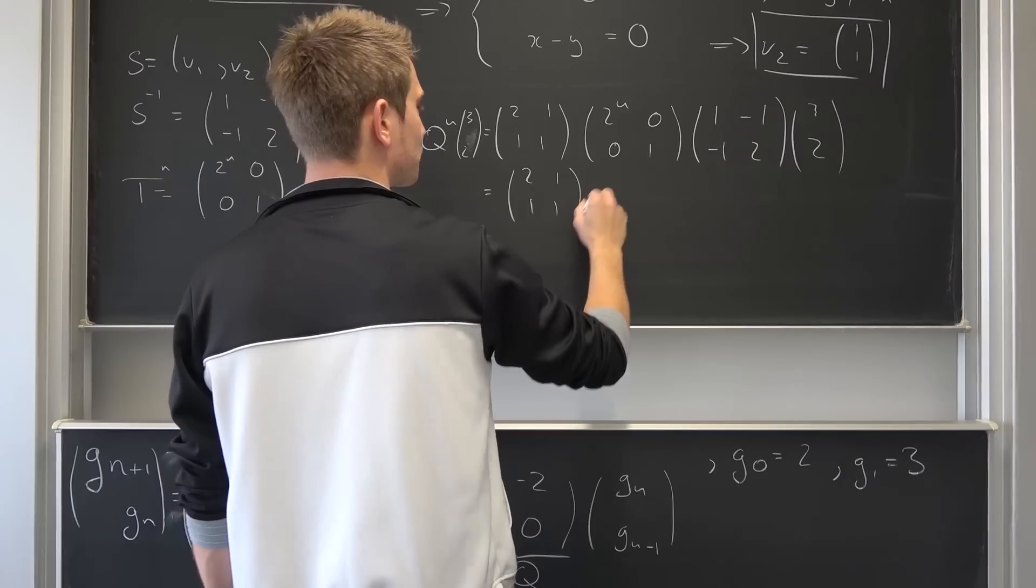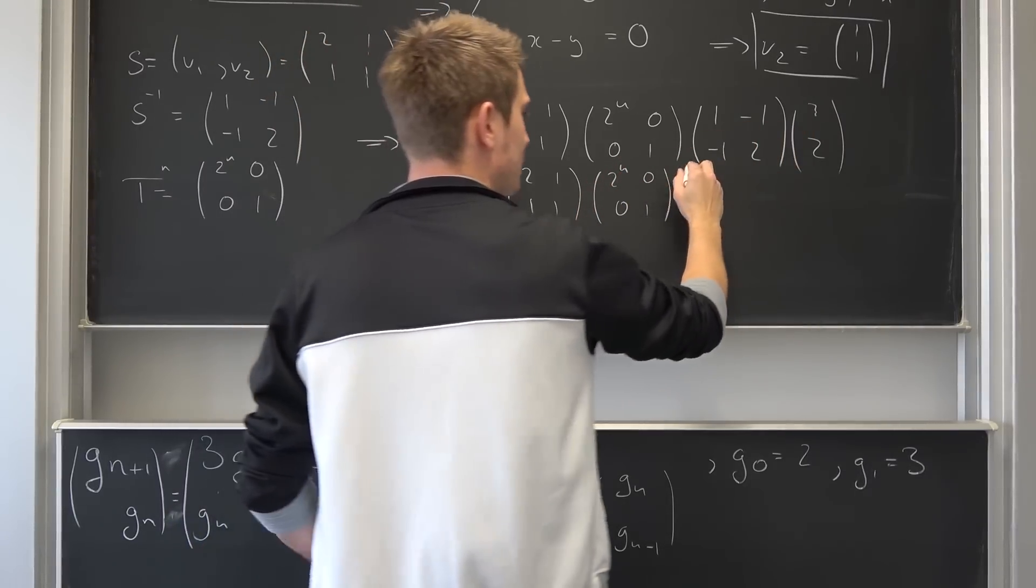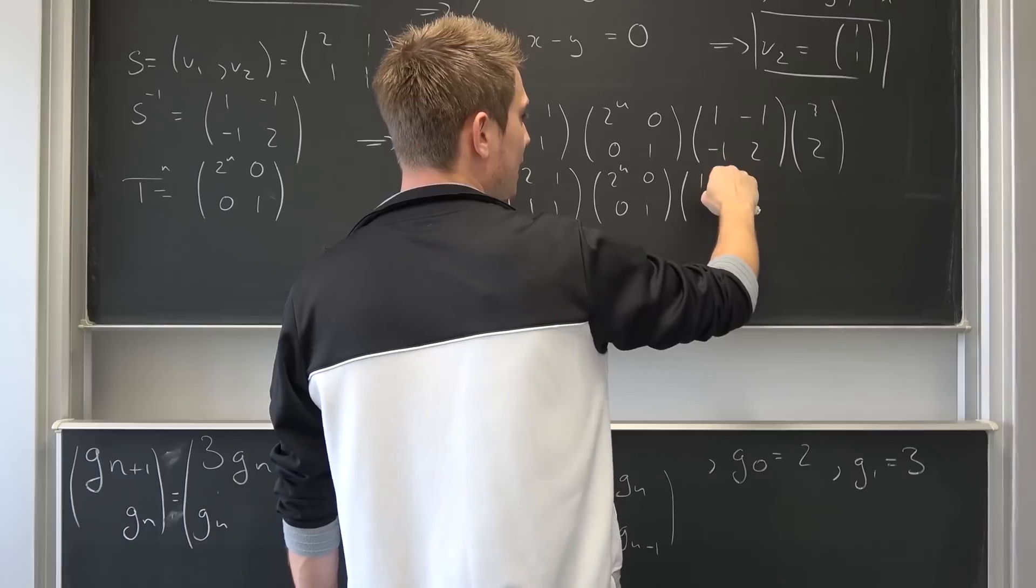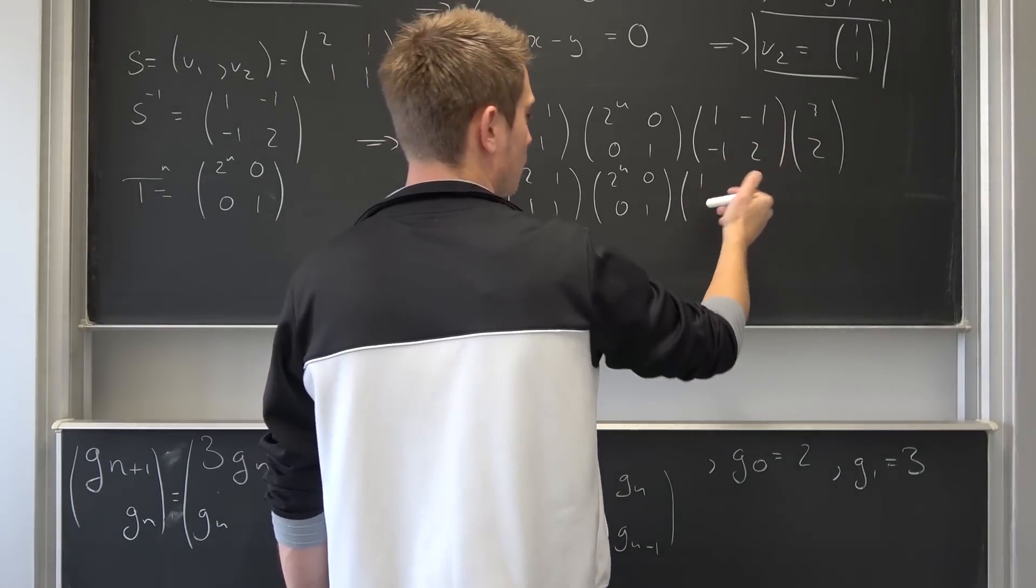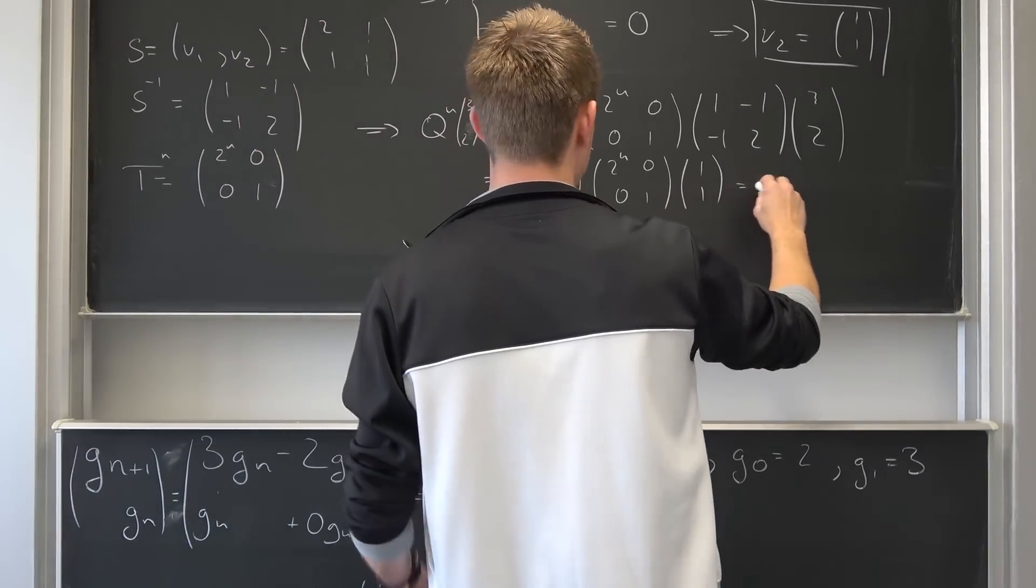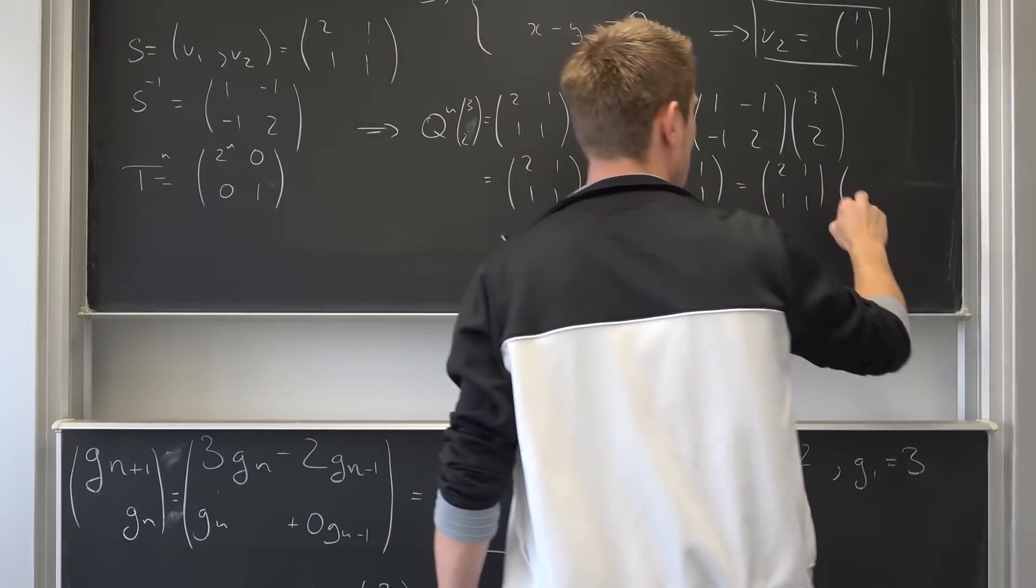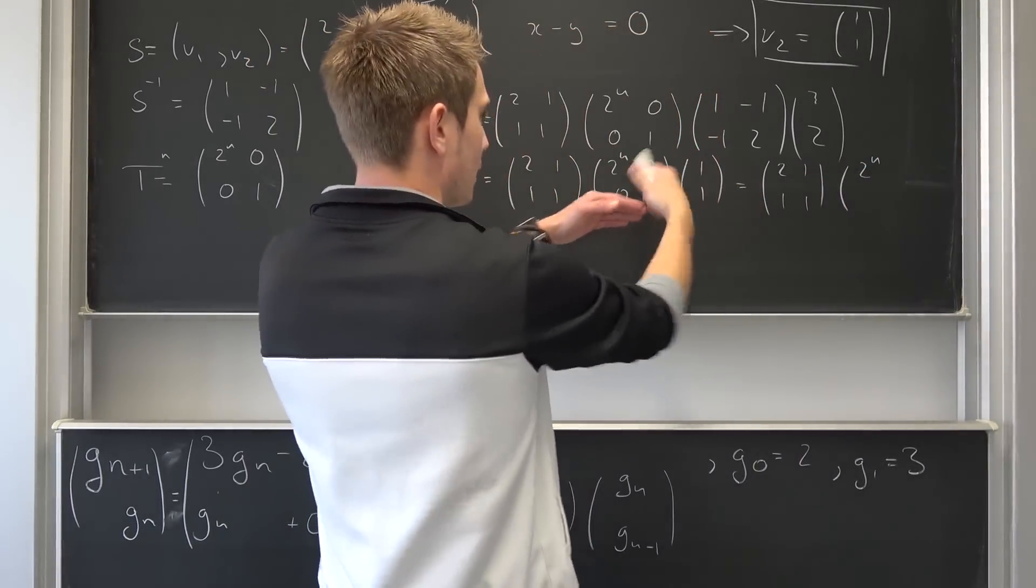We are going to multiply those together. This is 3 minus 2 is going to result in 1. So 2, 1, 1, 1, 2 to the nth power, 0, 0, 1. And then I set 1. And then we have negative 3 plus 4 is also 1. This is going to keep everything how it is basically. So this is 2, 1, 1, 1. We are going to put it on here. So 2 to the nth power and then 1.